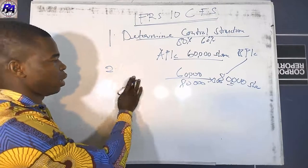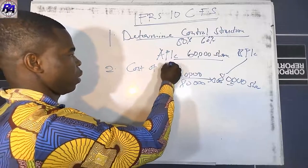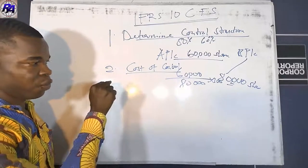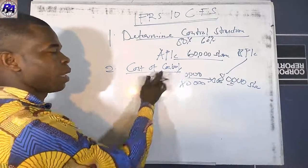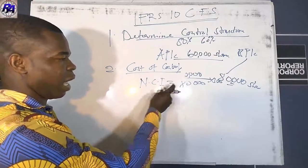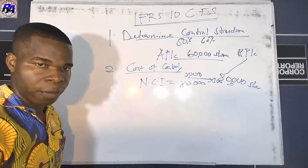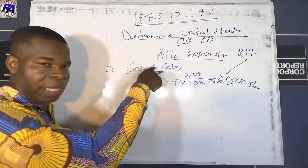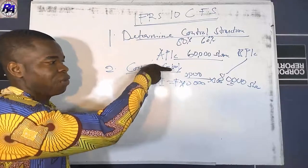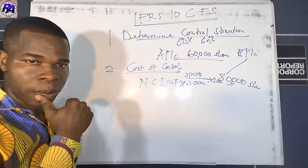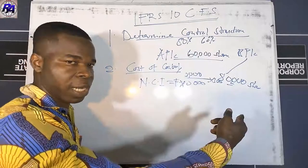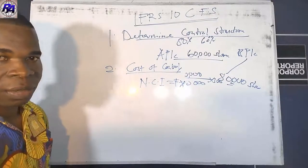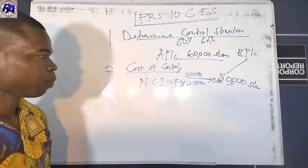After determining your control structure, calculate goodwill — also called cost of control. Remember that how NCI is valued affects your goodwill. If NCI is valued at fair value, it partakes in goodwill and the fair value must be added to the cost of investment before determining goodwill. If NCI is valued at the proportionate share, then NCI does not partake in goodwill at all.